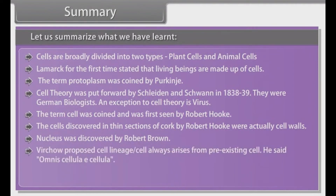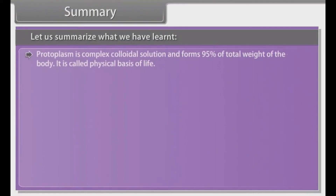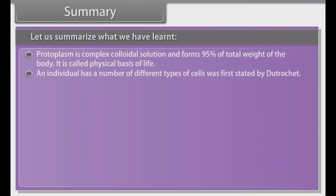Virchow proposed cell lineage — that cells always arise from pre-existing cells — saying "omnis cellula e cellula." The term sarcode was used for the living substance of the cell by Jordan. The minimum cell size seen under a light microscope is 0.25 micrometer. Protoplasm is a complex colloidal solution and forms 95% of the total weight of the body; it is called the physical basis of life. An individual having a number of different types of cells was first stated by Dutrocher.